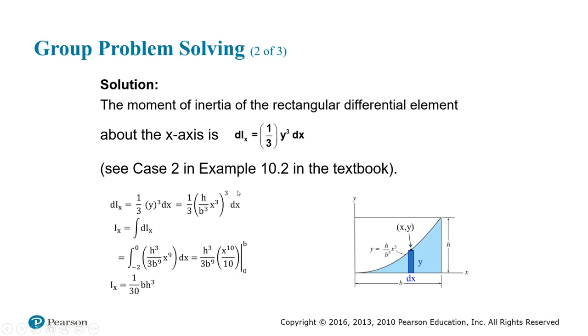They're just doing a little algebra. When you cube H, B cubed, X cubed, you get H cubed over B to the ninth, X to the ninth. That's where that term is coming in. And we just need to sum all of these contributions for X.